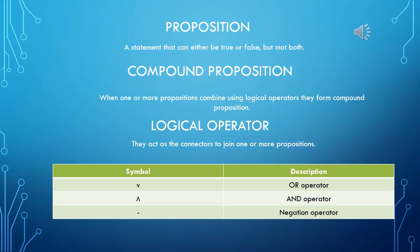What combines those propositions is a logical operator. Logical operators act as a connector to join one or more propositions. We have used three logical operators in this presentation: the OR operator, AND operator, and negation operator. OR operator is symbolized using the capital V. AND operator is symbolized as the upside-down version of V. And the negation operator is symbolized using the negative sign.